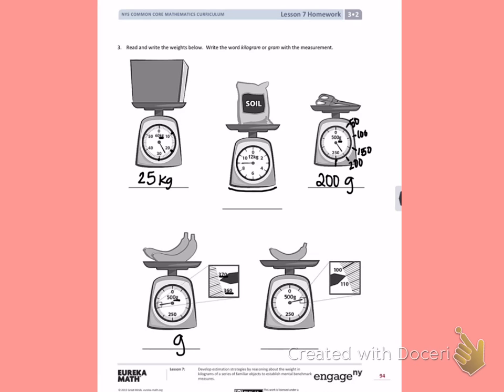So I count 360, 361, 362, 363, 364, 365, 366, 367. These two bananas weigh 367 grams. Try the same thing for the one banana.